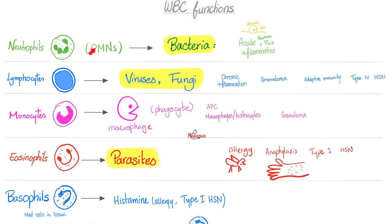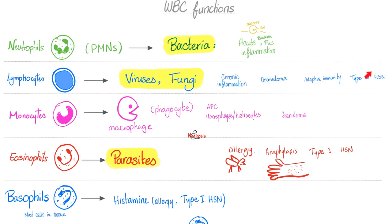Functions of white blood cells: Neutrophils are very important, especially against bacteria. These are the pus cells of acute inflammation that can form an abscess — literally a collection of pus. Lymphocytes defend your body against viruses and fungi. Lymphocytes are responsible for chronic inflammation, not acute, and help make a granuloma. They are part of adaptive immunity, the acquired immunity more sophisticated than innate immunity. Lymphocytes are also involved in type-4 hypersensitivity reaction.